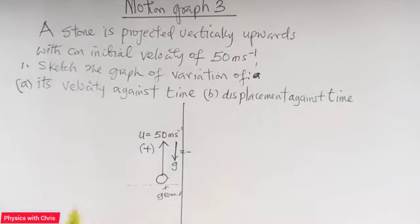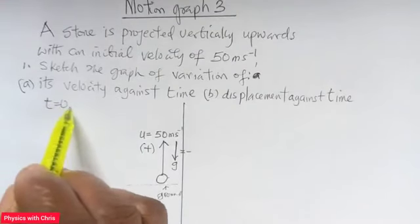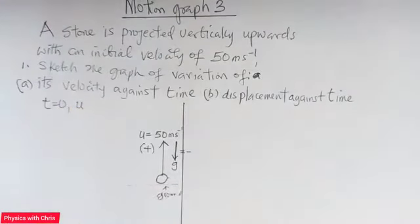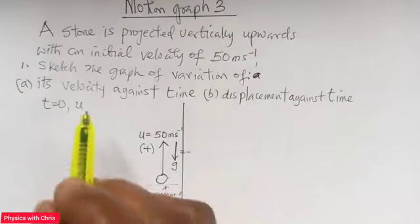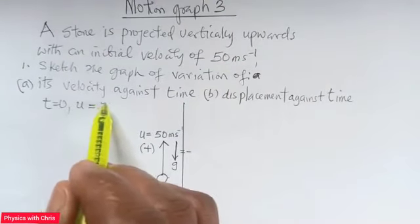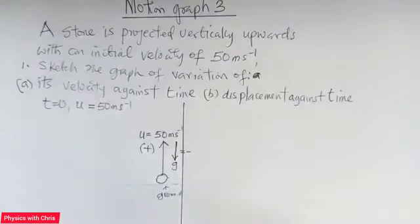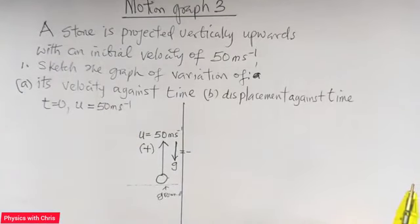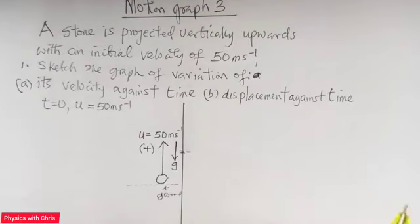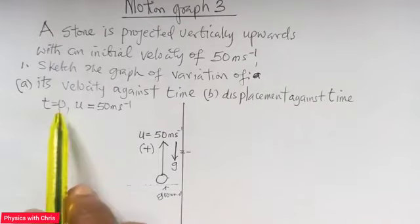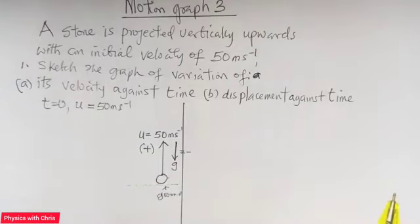At time t equals 0, the body has an initial velocity that is non-zero — specifically 50 meters per second. This is different from a body dropped from rest, as covered in my first video lesson, where at t equals 0 the initial speed was 0. But here, at t equals 0, the body's initial speed is 50 meters per second.